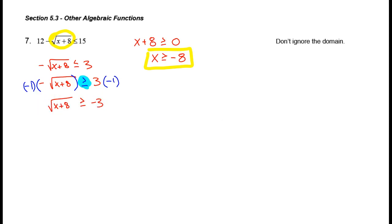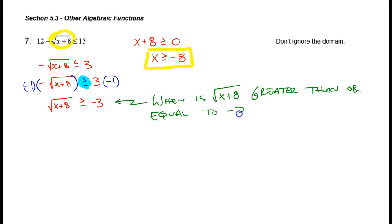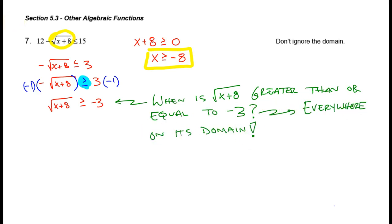Got to ask a question here. Where on earth is the square root of x plus 8 going to be greater than or equal to negative 3? Of course, this makes perfect sense — everywhere on its domain it has to be greater than or equal to negative 3, because the square root function cannot give an output of a negative number. So it just so happens that x is greater than or equal to negative 8. Not only is it the domain of that square root function, but it is the solution to this inequality.